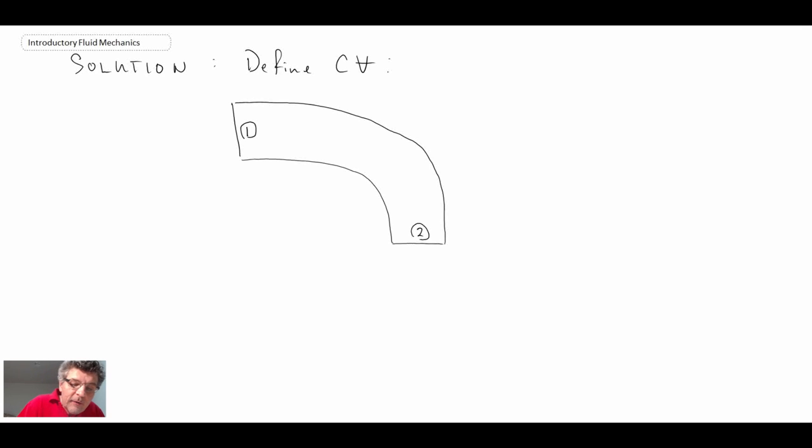And we were told we have V1 coming in here, V2 down there. And what I'm going to do is define the control volume that looks something like this. So we're crossing the interfaces where we have mass crossing the boundary, which is good because we want to be able to do that.